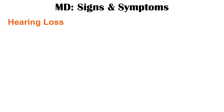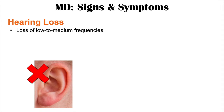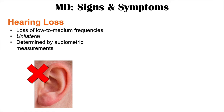Another very important finding is hearing loss. It's important to note that the hearing loss is a loss of low to medium frequencies, and it's going to be unilateral most often, though it could occur bilaterally. In order to determine this hearing loss, it has to be confirmed by audiometric measurements. As the condition continues, this hearing loss can worsen over time and may become permanent.